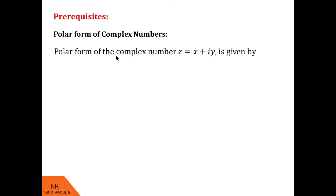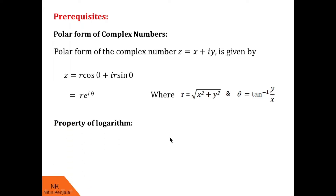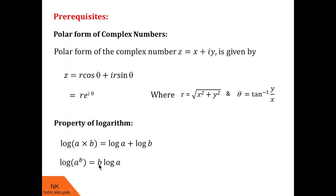We know that polar form of the complex number z = x + iy is given by z = r·cosθ + i·r·sinθ, which can also be written as r·e^(iθ). Here r is called the modulus of z, given by √(x² + y²), and θ is called the argument of z, given by tan⁻¹(y/x). The first log property is: log(a·b) = log(a) + log(b), and log(a^b) = b·log(a).